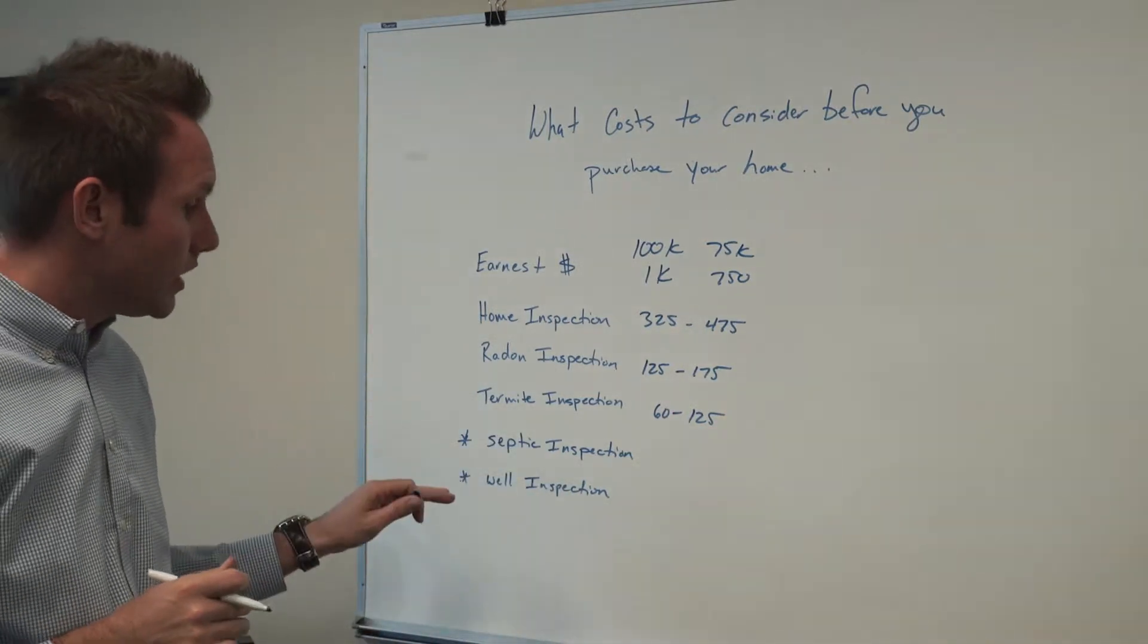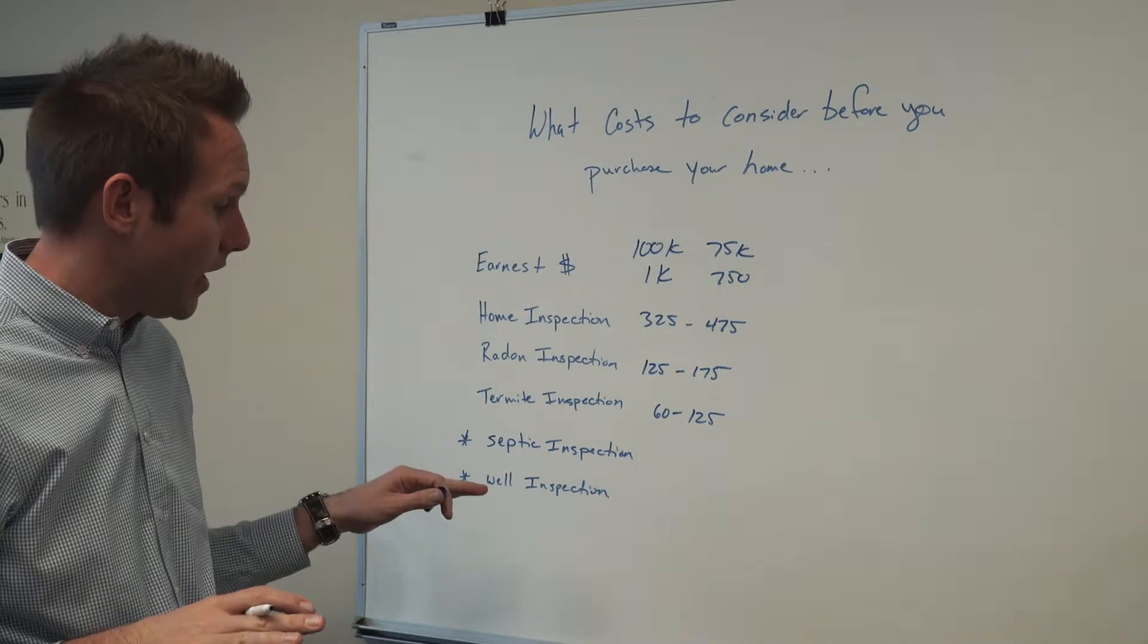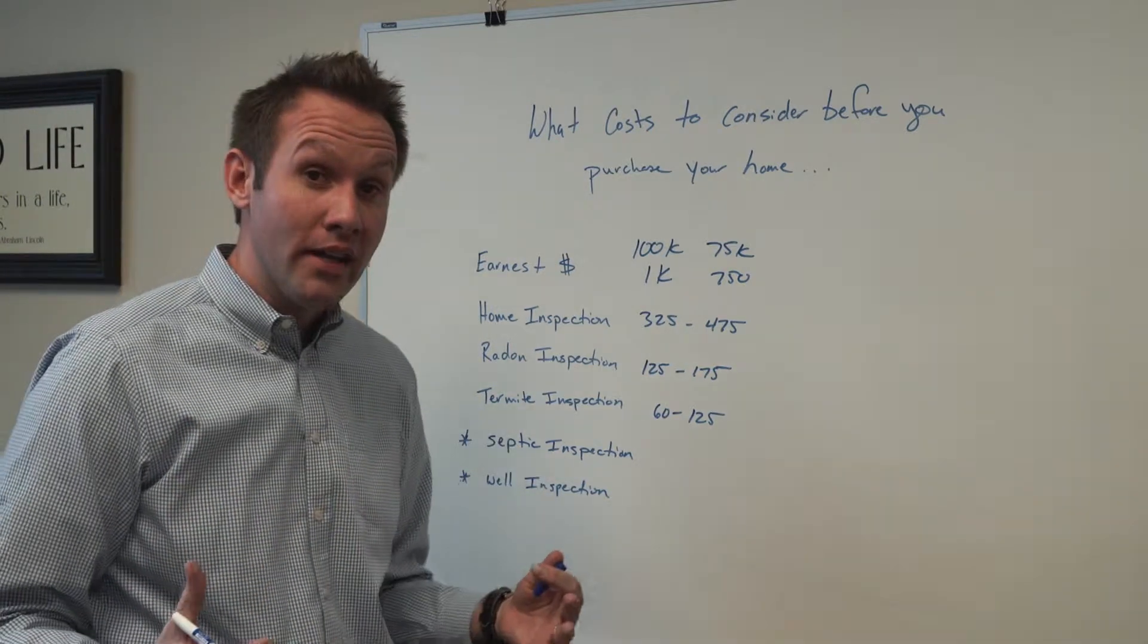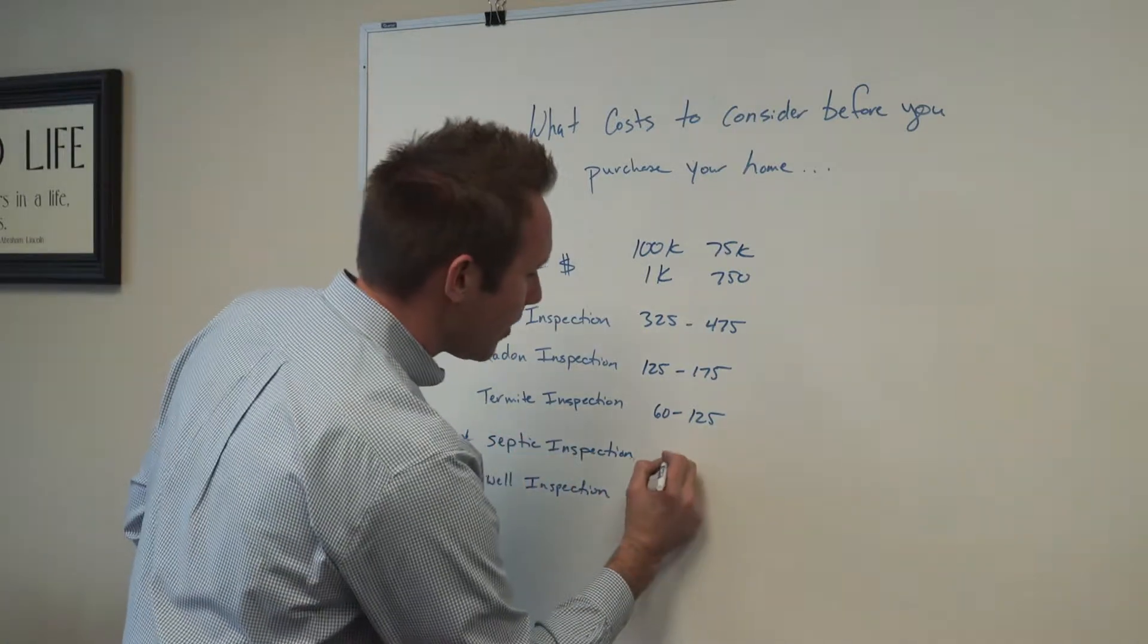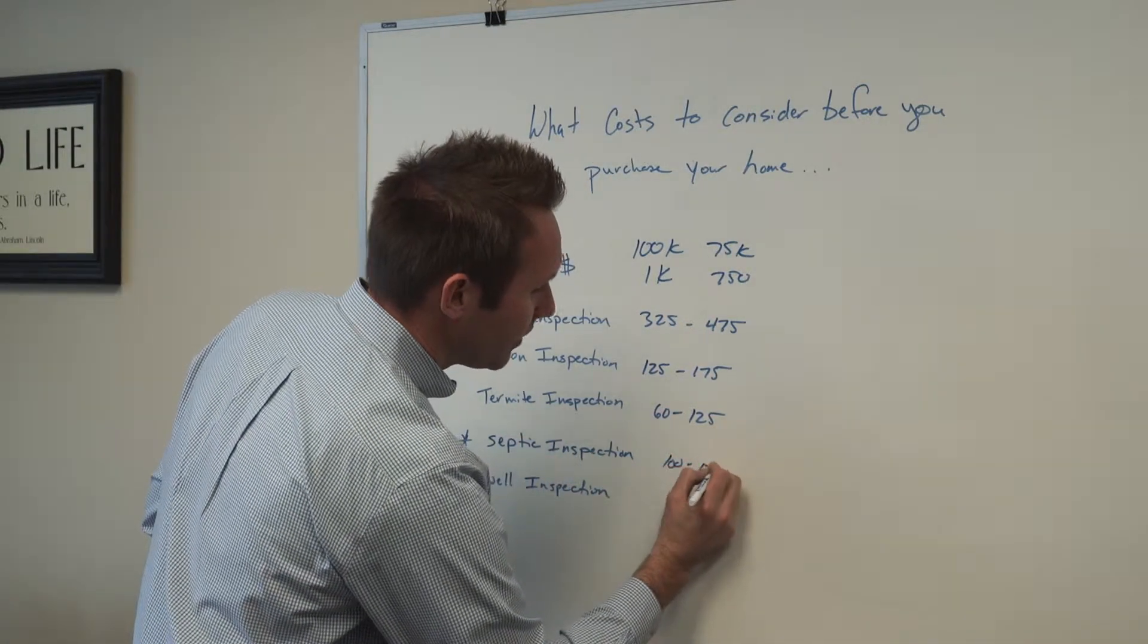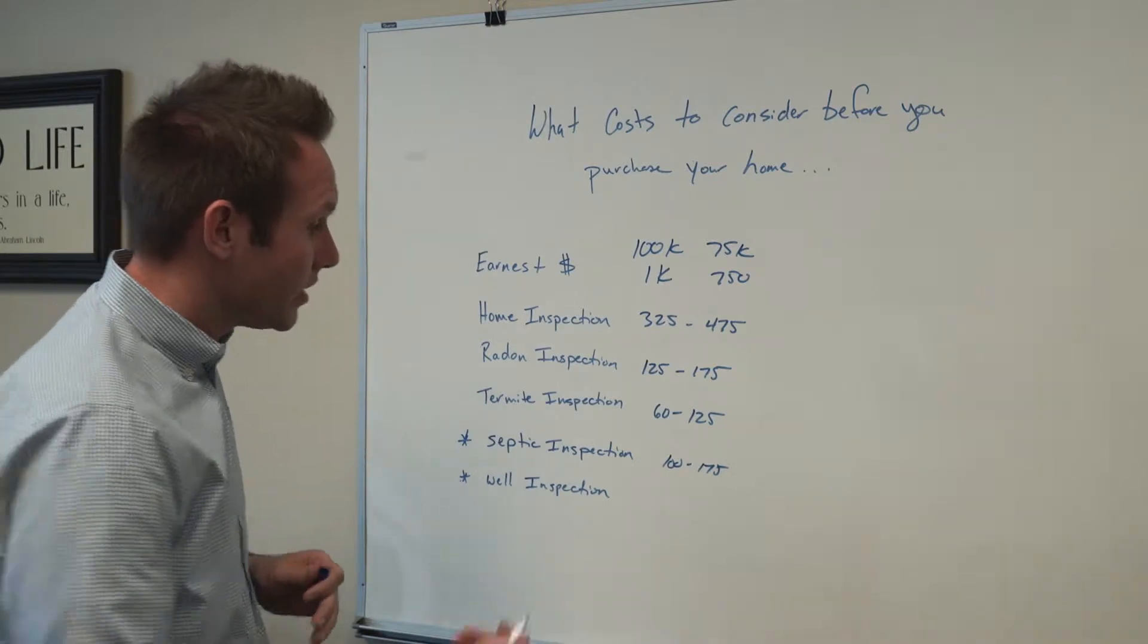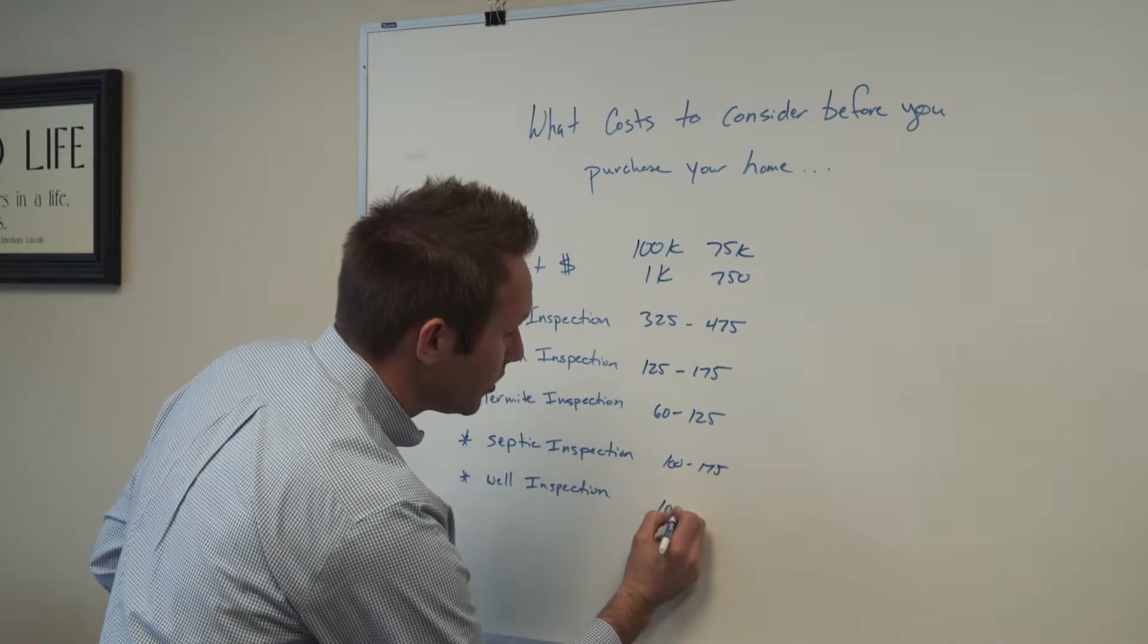Lastly, septic inspection and well inspection. Not every home requires these. It's based on where the home is located. If the home is in the country and doesn't have city sewer or city water, you'd need a septic inspection. A septic inspection is anywhere from $100 to $175. Well inspection is the same, from $100 to $175.